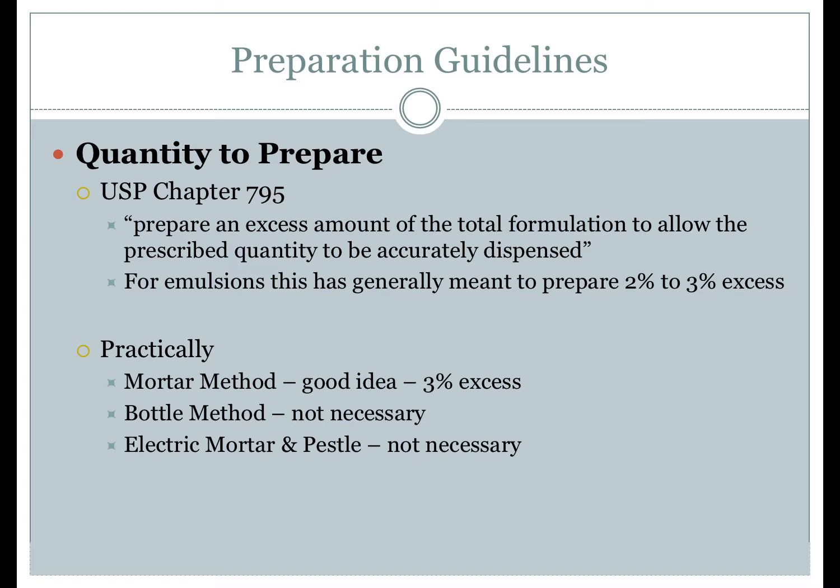Now, preparation guidelines for compounding emulsions. The first guideline describes the quantity to prepare. USP Chapter 795 states to prepare an excess amount to allow the prescribed quantity to be accurately dispensed. For emulsions, 2–3% excess is traditionally prepared. When using the mortar method, calculate and prepare 3% excess but only dispense the prescribed amount. There is no loss when using the bottle method or automated method where mixing occurs in the dispensing container, so it is not necessary to compound excess in those cases.